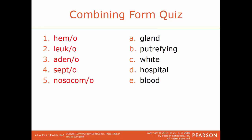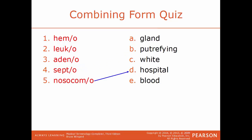We'll end this chapter with a combining form quiz. Match the terms: HEMO, leuko, adeno, septo, and nosocomial with gland, putrefying, white, hospital, or blood. HEMO matches with blood; leuko with white; adeno with gland; septo with putrefying; nosocomial with hospital. That brings us to the end of chapter seven on the blood, lymphatic system, and immune system. We'll continue with chapter eight in our next video.